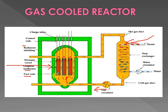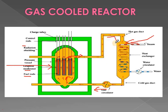Inside the reactor, nuclear fission reaction is taking place because of the fuel rods, generating a large amount of heat. The gas pumped inside the vessel gets heated and is converted into hot gas, which then passes into the steam generator. In the steam generator, water is supplied through spiral tubes.